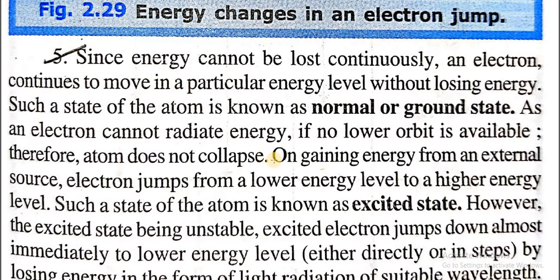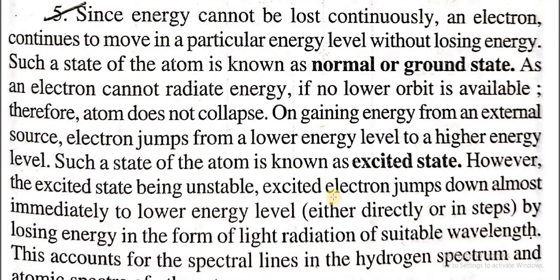On gaining energy from an external source, an electron jumps from a lower energy level to a higher energy level. Such a state of the atom is known as the excited state. However, the excited state being unstable, the excited electron jumps down almost immediately to a lower energy level, either directly or in steps, by losing energy in the form of light radiations of suitable wavelength.